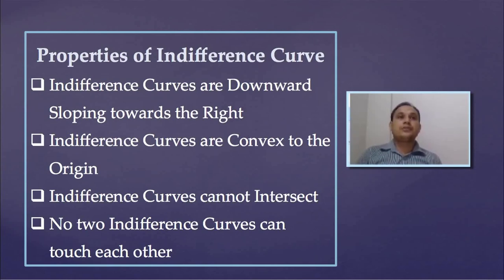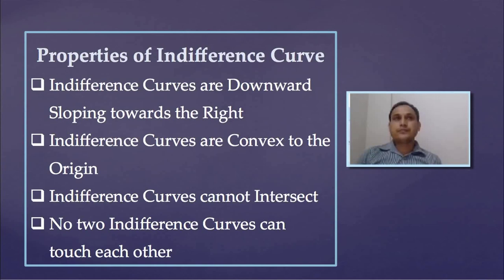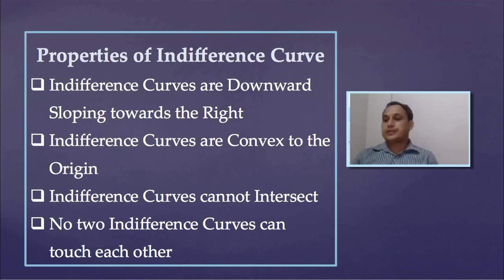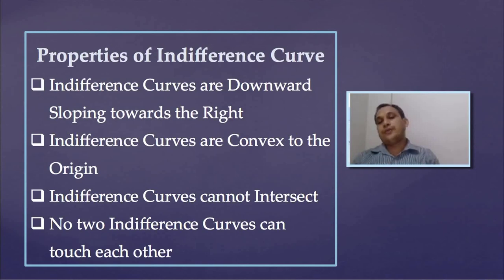The next property is that indifference curves cannot intersect each other. This is another important property — no two indifference curves can intersect. Only one indifference curve can pass through any given point. If two indifference curves were to intersect, that would give contradictory results because the point of intersection would lie on two different indifference curves.